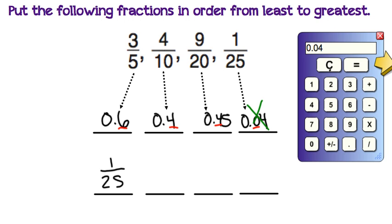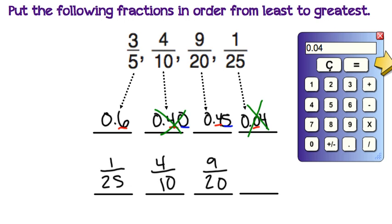We can cross that out — that one's done. Now looking at the remaining underlined numbers, we have a 6, a 4, and a 4. The 4s would be the next smallest. You could write this as 0.4 or 0.40. Looking at the 0 and the 5 in the hundredths place, 0 is smaller, so 4 tenths is our next smallest fraction. After that would come 0.45, which is 9 twentieths. And by process of elimination, our largest fraction is 3 fifths. We've now put these in order from least to greatest just by turning them all into decimals.